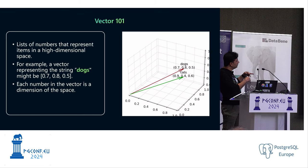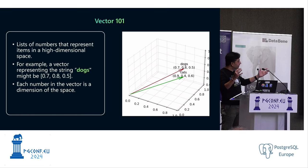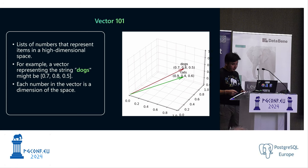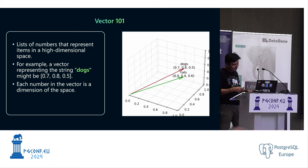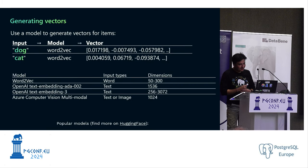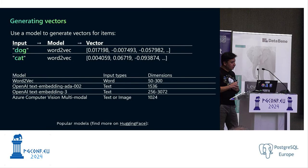Often we don't know exactly what each number means on its own — if you see [0.7, 0.8, 0.5] you don't know what it represents — but in a vector dimension space they make sense. You can see that dogs and cats, though different things, are quite related because they're both pets.